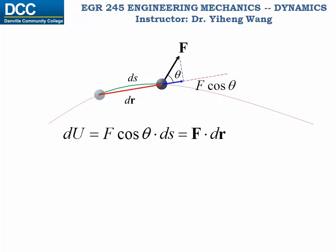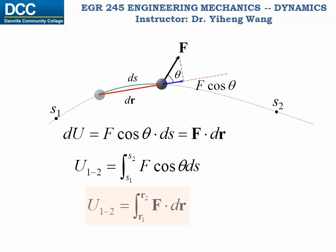Therefore, when the particle has moved from location s1 to location s2, the total work done by this force to this particle during this process equals to the integration of F cosine theta ds from s1 to s2, or the integration of the dot product of F and dr from r1 to r2.